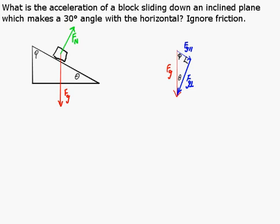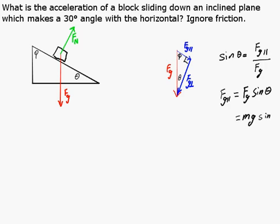We can use trigonometry to find a relationship and determine the part of the force of gravity that's parallel to the inclined plane. So the force of gravity parallel to the inclined plane is mg sine 30 degrees.